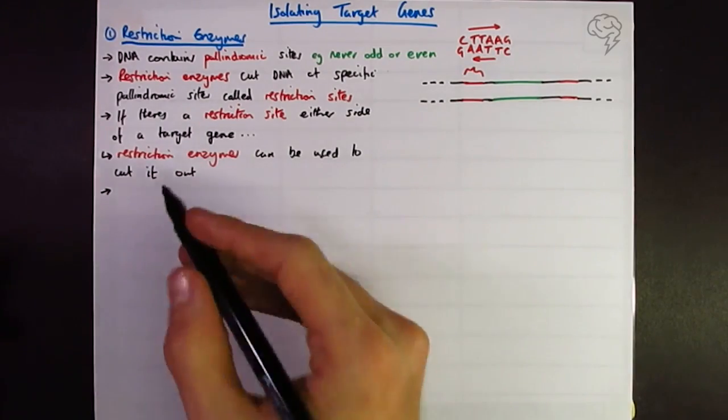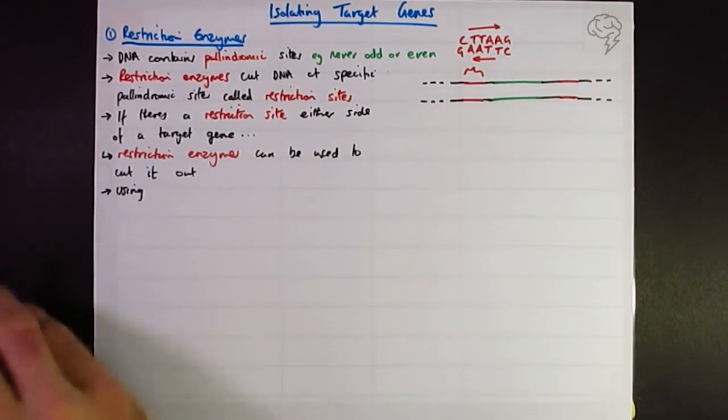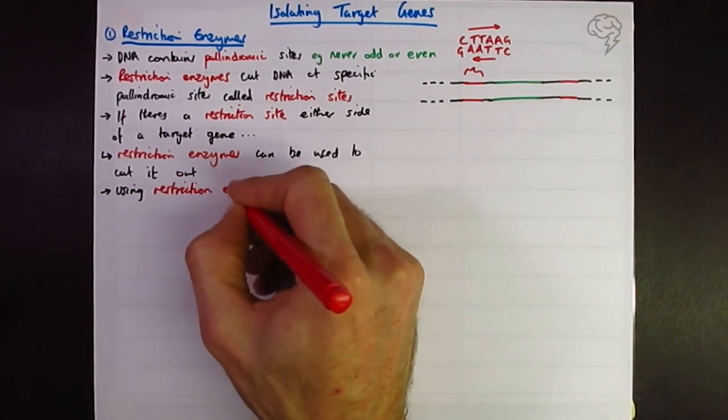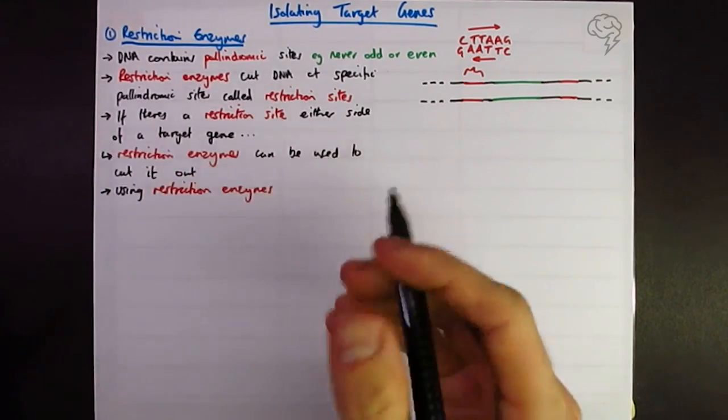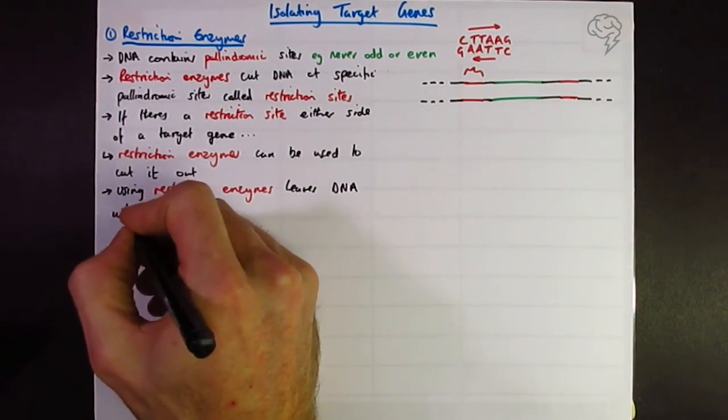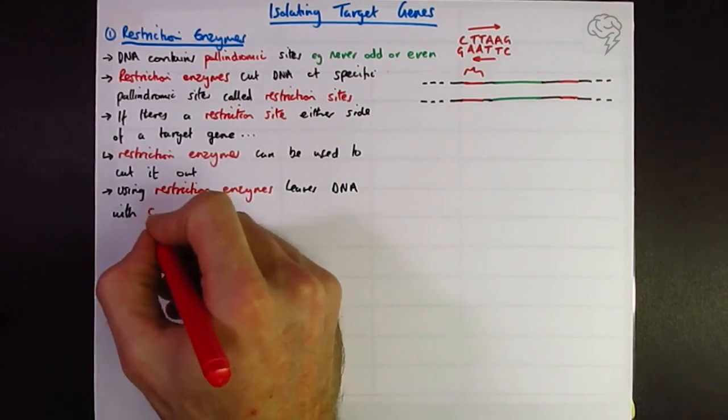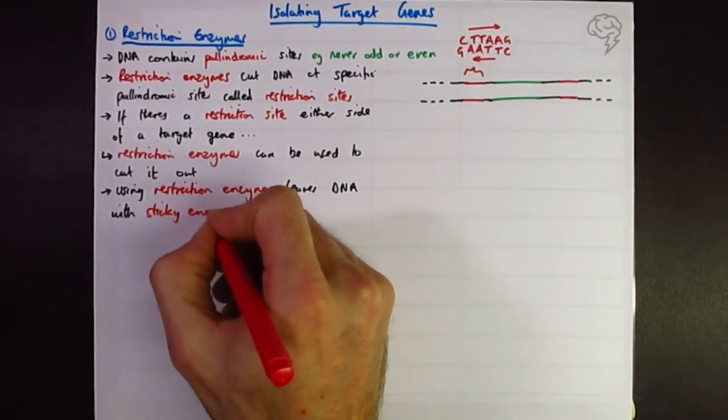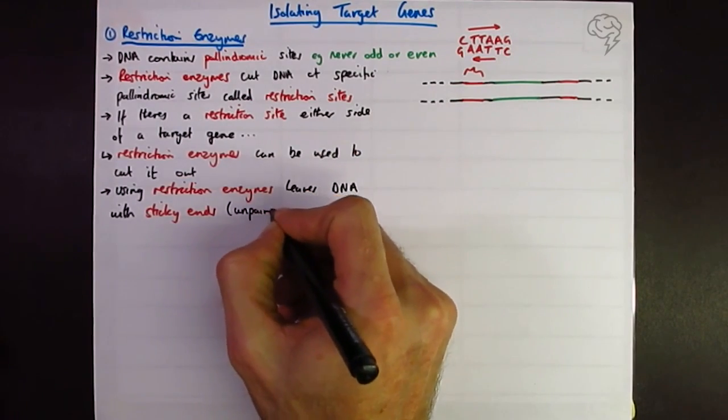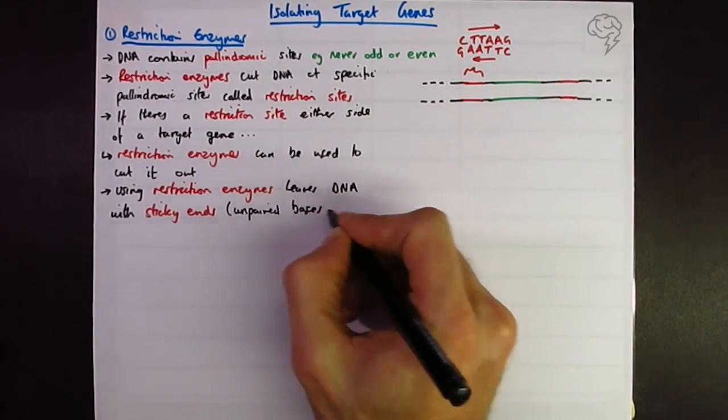And last of all, we can say that using a restriction enzyme is going to leave what we call sticky ends. Now this is a key term. Sounds a bit amateur, but this is what you need to call them, sticky ends. And sticky ends are unpaired bases.